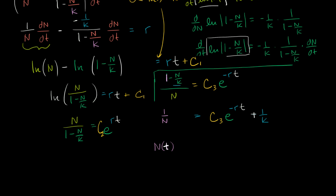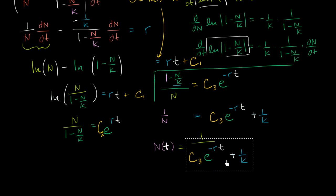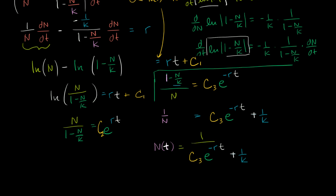So n(t) is equal to 1 over that whole expression — c3·e^(−rt) + 1/k — and that by itself is already interesting.